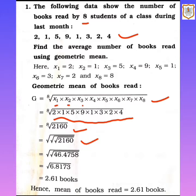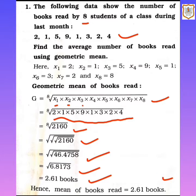Here you can see three square roots are shown, because you have to do the square root three times of 2,160. First, the square root of 2,160 gives 46.4758. Then the square root of 46.4758 gives 6.8173. Again taking the square root of 6.8173 gives the answer approximately 2.261 books. So the mean number of books read is approximately 2.261. Whenever the 8th root is required, you do the square root process three times.